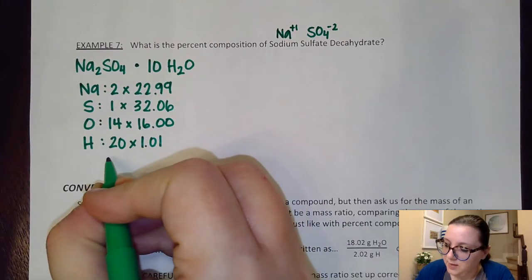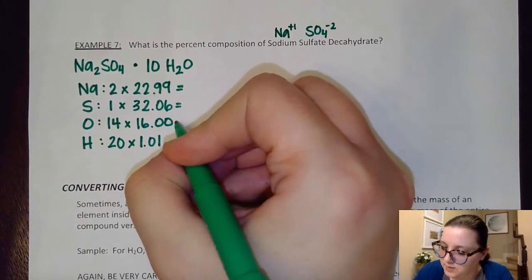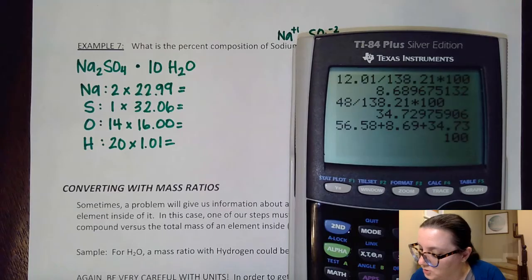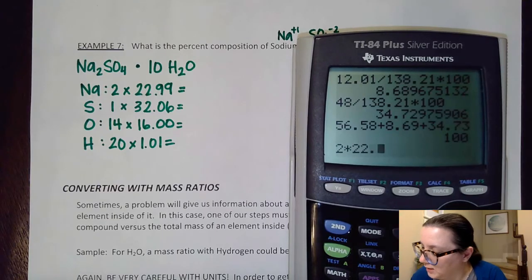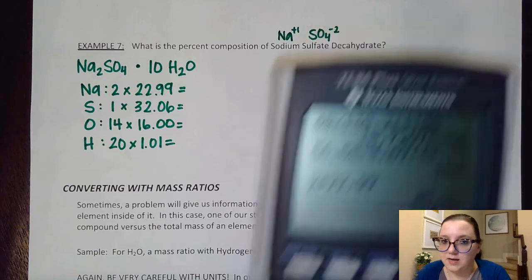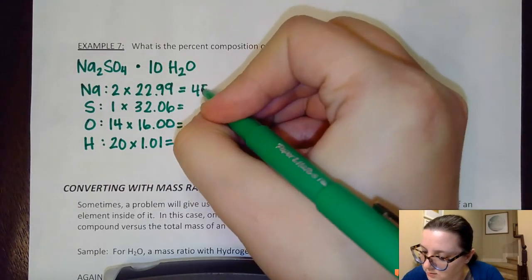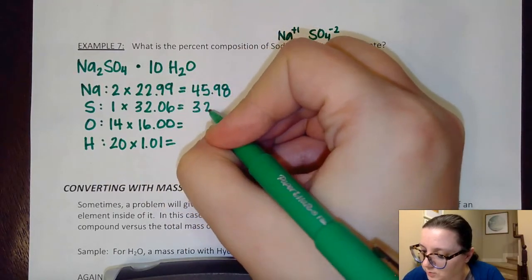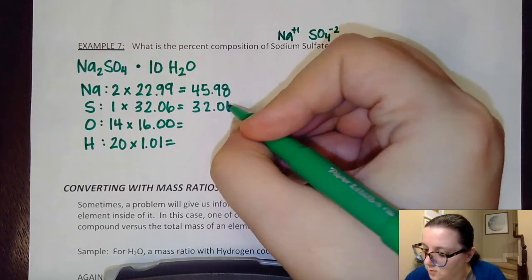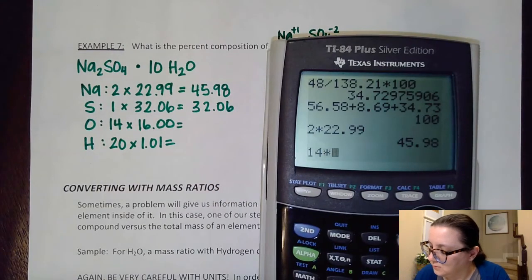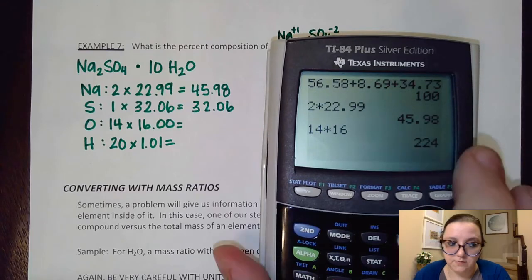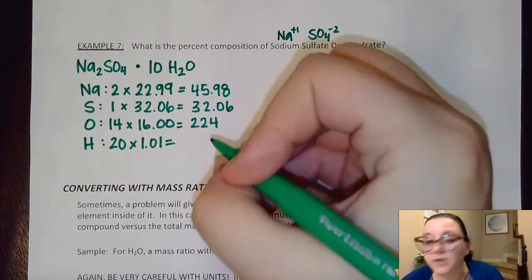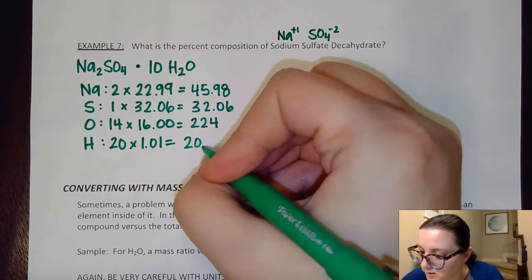All right. So now I'm going to get some individual totals here for these. So, let's get my calculator here. 2 times the 22.99 would be 45.98. Next, the sulfur, that's going to just be 32.06. 14 times 16 is going to be 224. And then 20 times 1.01 is going to be 20.20.